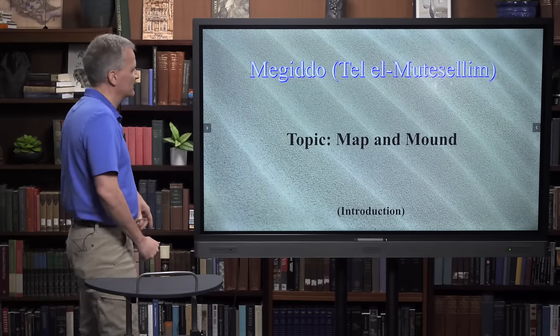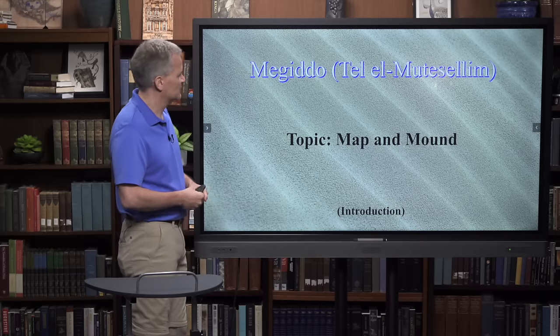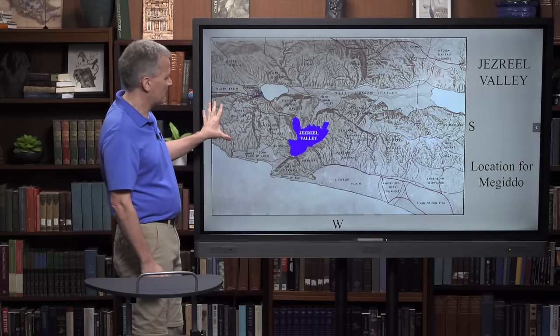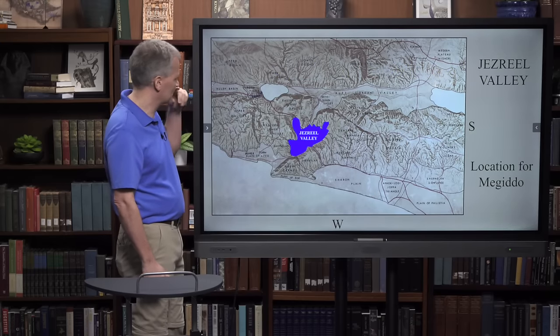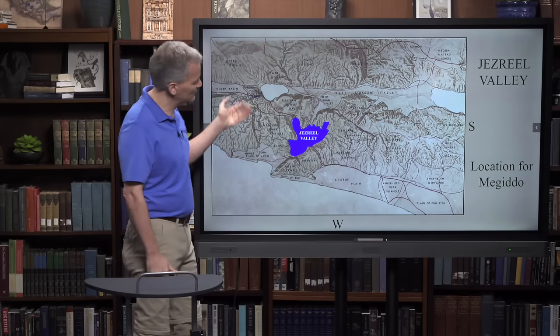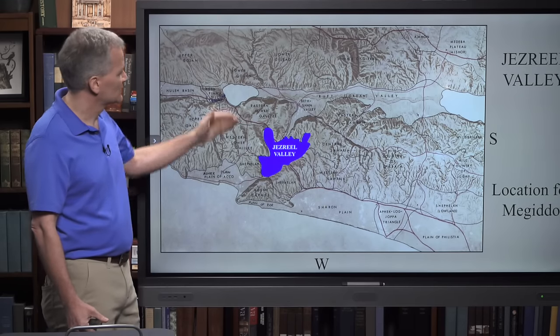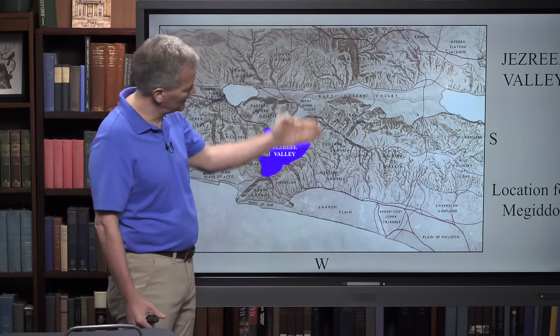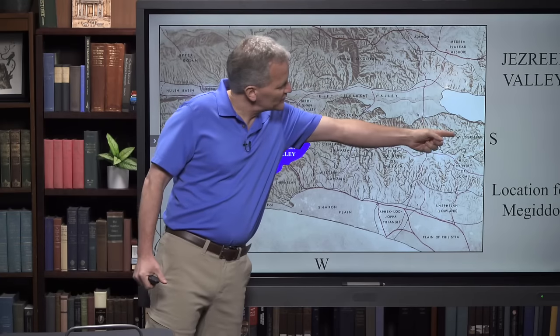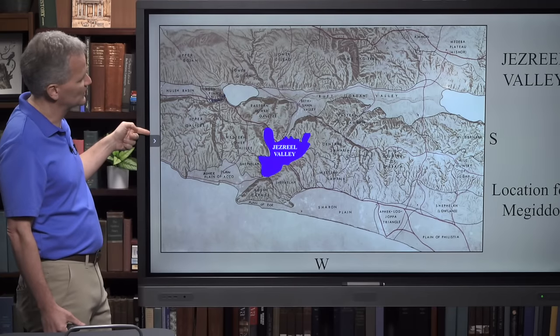Where is Megiddo located? Let's look at the map and then the mound that constitutes the site of Megiddo. This is an Israeli map, and it's different from most maps we would look at because it's not north-oriented but east-oriented. The reason for that is that for the ancient Israelites, when they think of where things begin and where things start, it's always in the east, because civilization begins in the east from where they're located. So east is at the top of the map, west is at the bottom, south on one end, and north on the other.